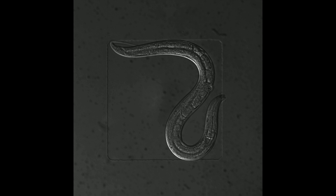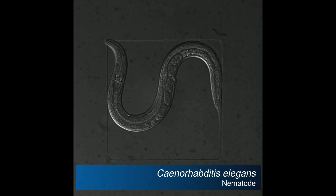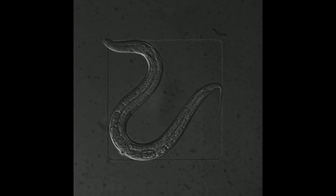We studied how sleep is controlled in the roundworm Caenorhabditis elegans, an important model organism used to study fundamental biological processes at molecular and mechanistic levels. Adult C. elegans hermaphrodites have exactly 302 neurons, each with an individual name. Sleep in C. elegans requires a single sleep-active neuron called RIS.